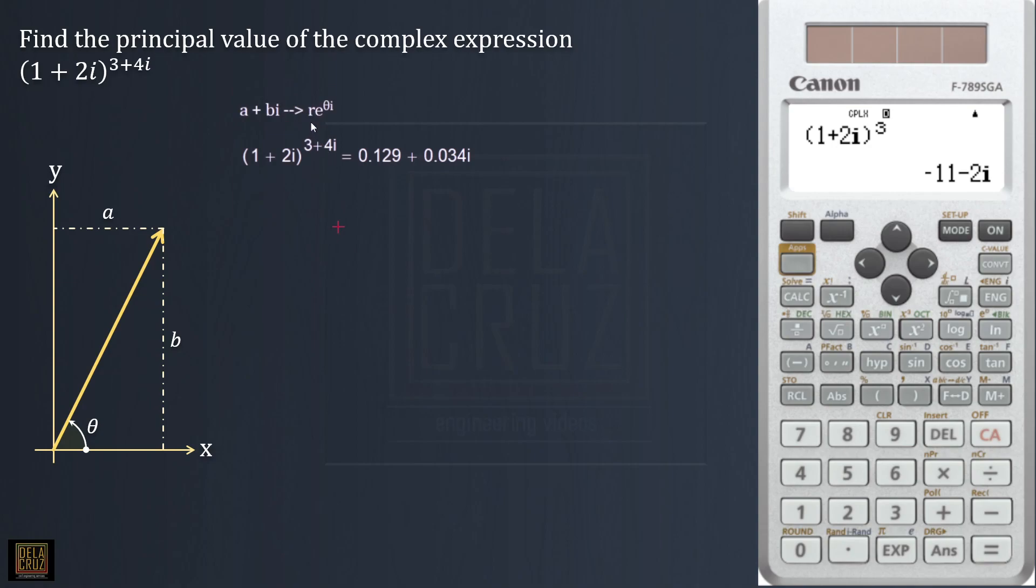Let me open the calculator. If we are talking about the board exam, for example, that's complex mode, mode 2, then just input 1 plus 2i raised to 3 plus 4i. The calculator cannot operate this one, if a complex number is raised to another complex number.